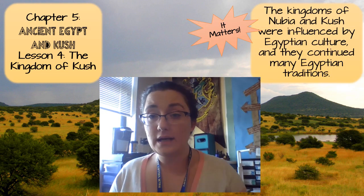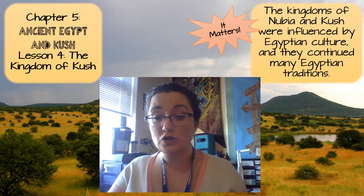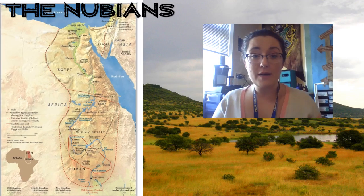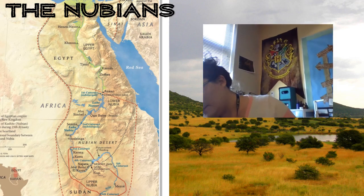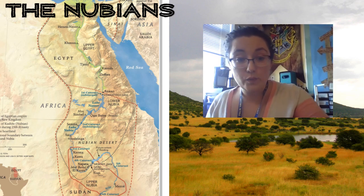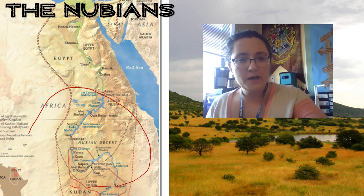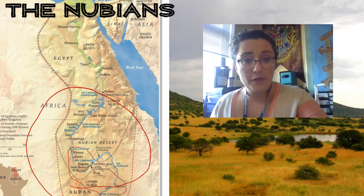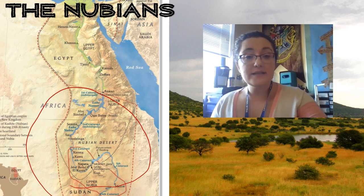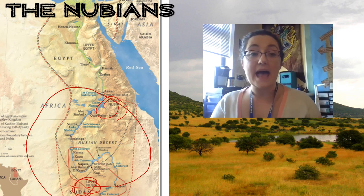It matters because the kingdoms of Nubia and Cush were influenced by Egyptian culture, and they also continued many Egyptian traditions. Now let's talk about the Nubians first. Nubia is a region, kind of like North America or the Southwest is a region. It's south of the cataracts of Egypt, south of Upper Egypt. It's divided up along the Nile into Upper Nubia in the south and Lower Nubia in the north, for the same reasons — that elevation.